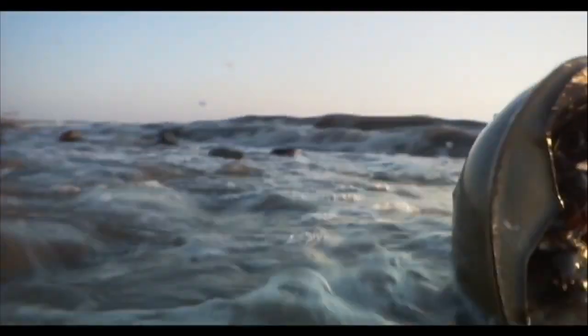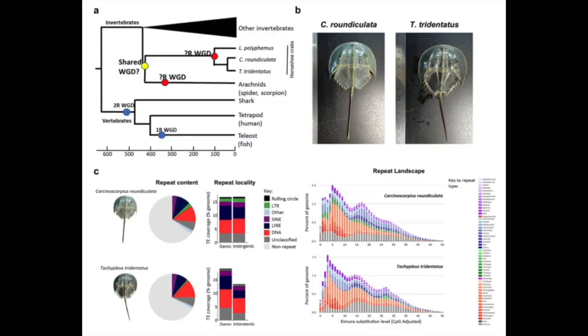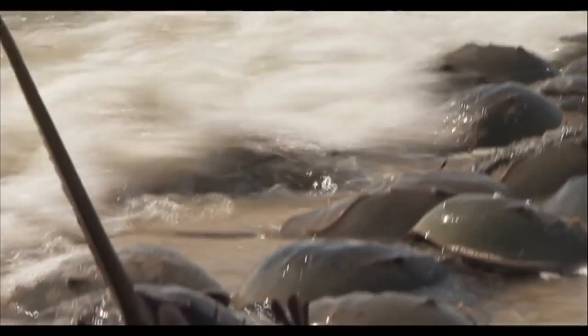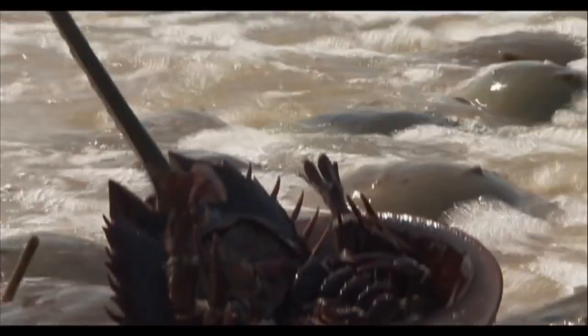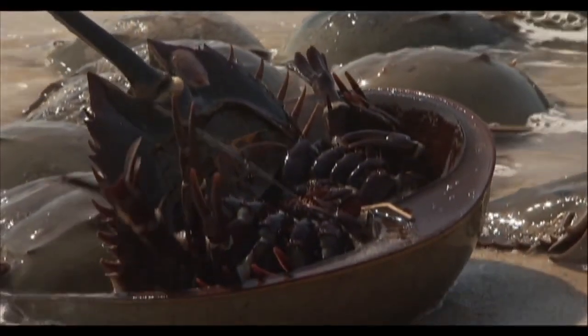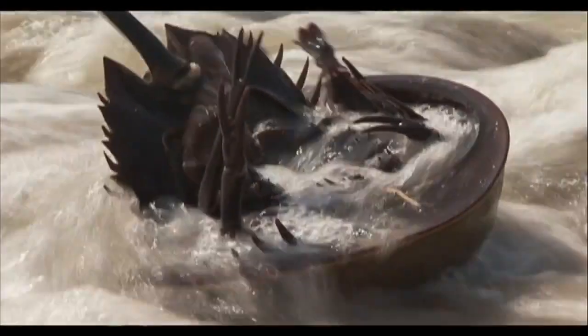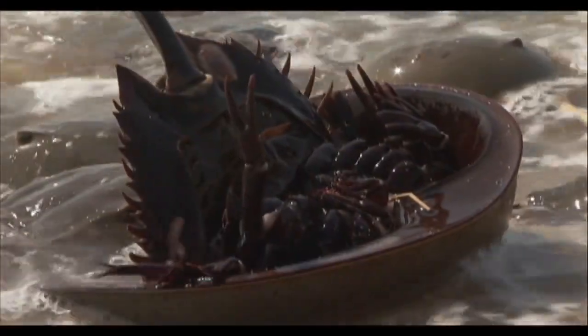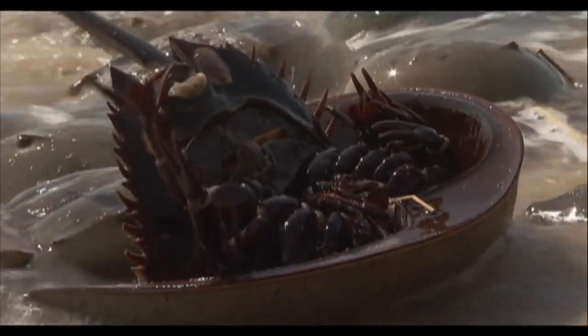Furthermore, DNA analysis also finds that horseshoe crabs and trilobites share a large amount of DNA, making it more than likely that they are distant relatives of each other. However, natural selection has allowed horseshoe crabs to exist until today, while the other two have gone extinct.